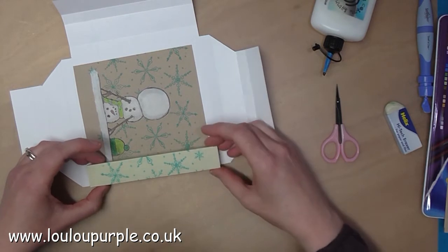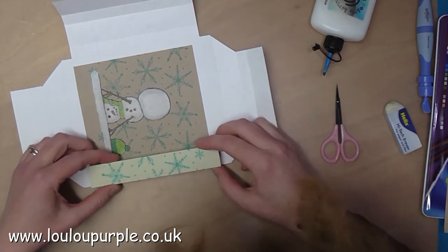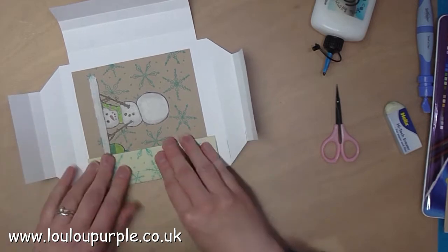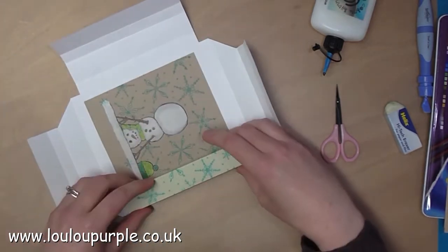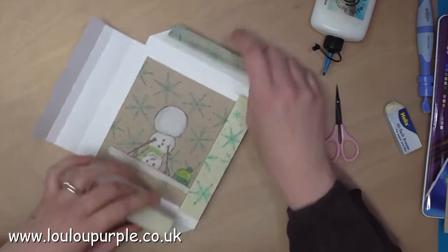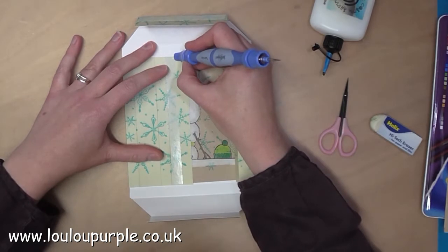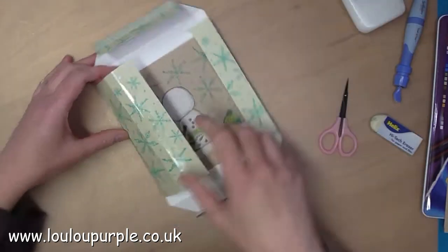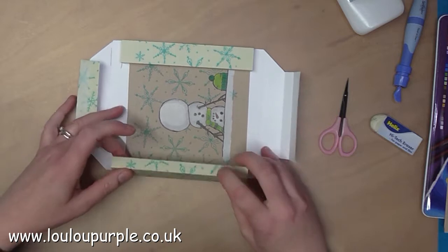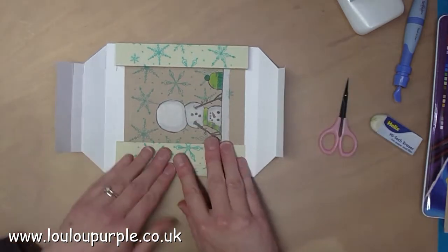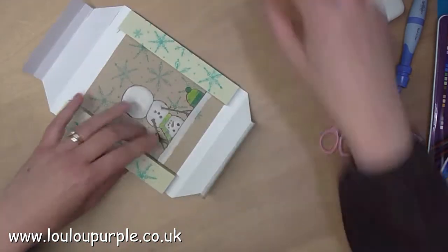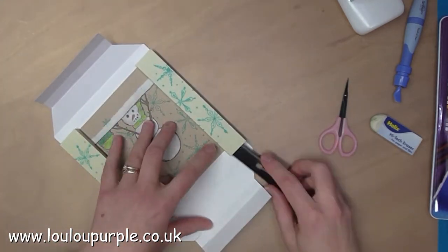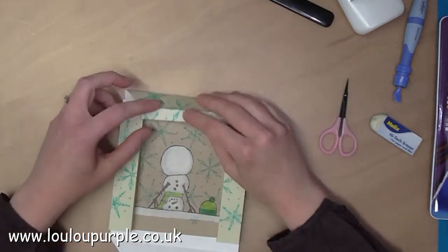You just fold the long sides in first, making sure that the edge butts up to the bottom of the box. Fold it down to make sure that it is in position and it is straight. Then repeat this on the other long side. I am just using my bone folder to push down the bottom of the flap so it makes contact to the base of the shadow box.